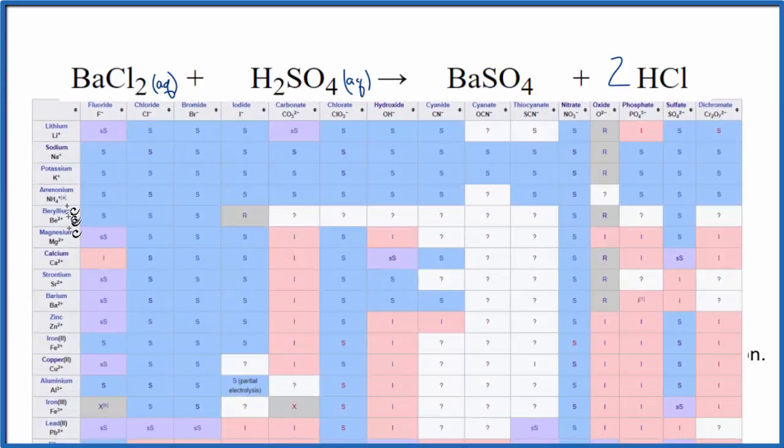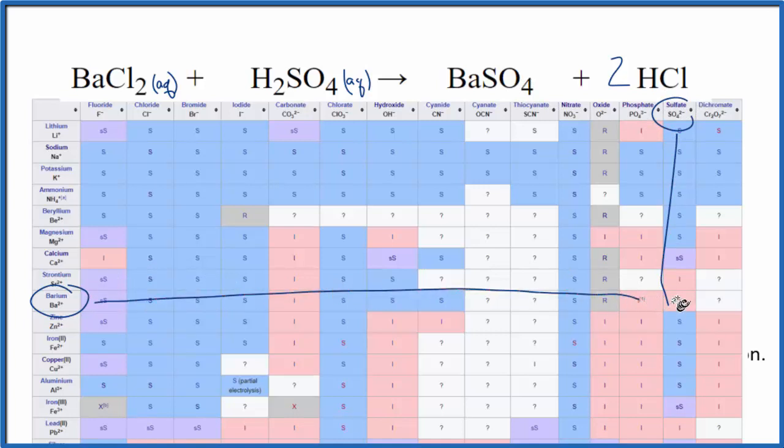So on our solubility table, we find barium right here, and then we're looking for sulfate, which is over here. So we go down and then across here, and we see this I right here for barium sulfate. That I means it's insoluble. It's not going to dissolve. So it's going to be a solid.